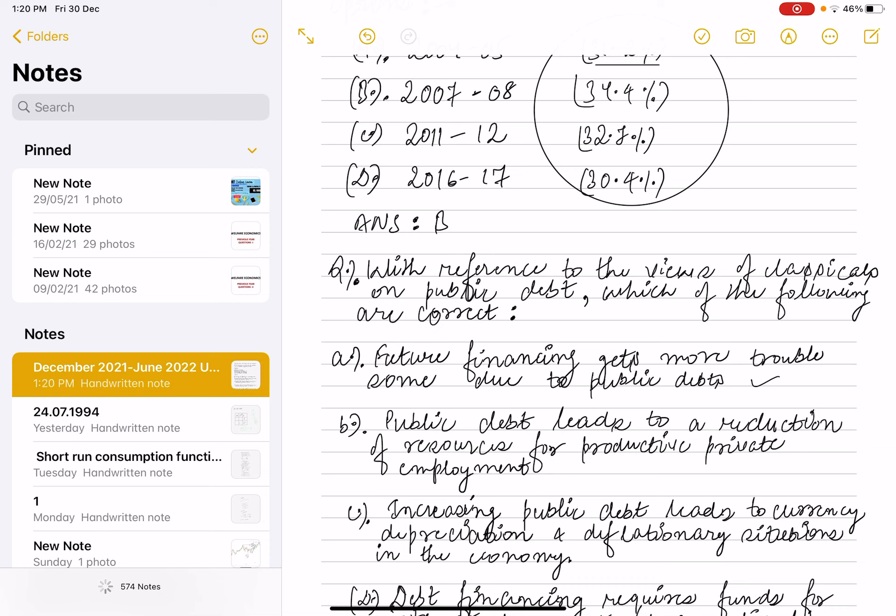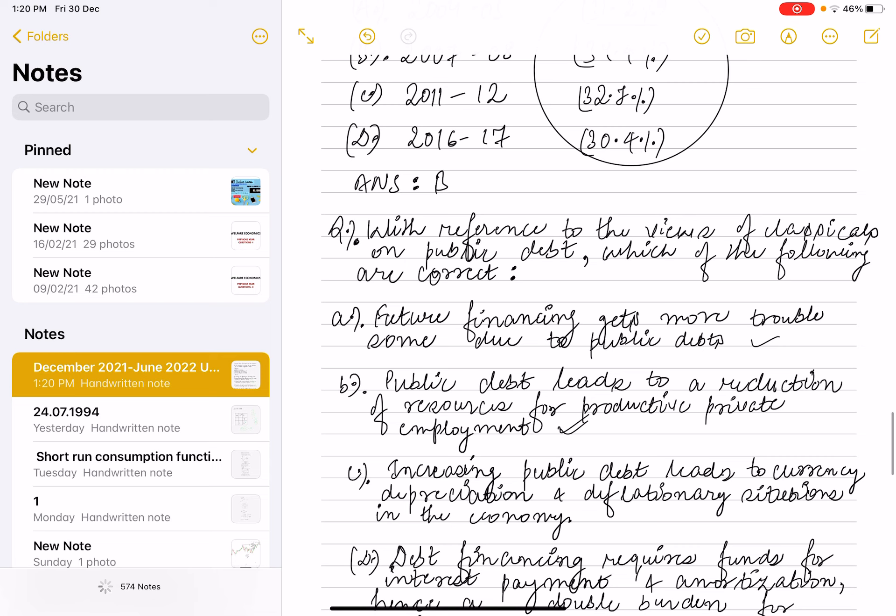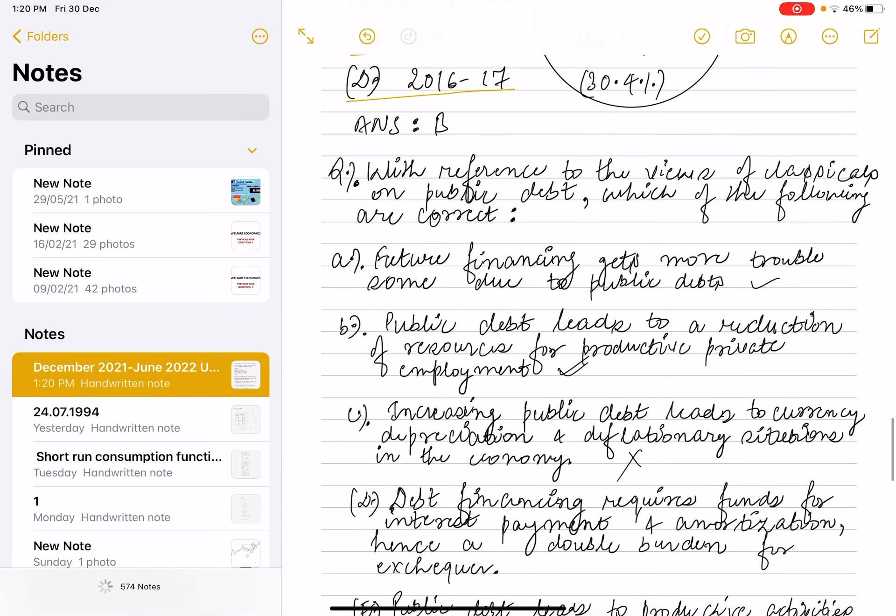Option C is: increasing public debt leads to currency depreciation and deflationary situation in the economy - this is not correct as per the classical view on public debt. Next: debt financing requires funds for interest payment and amortization, hence a double burden on exchequer - this is correct.